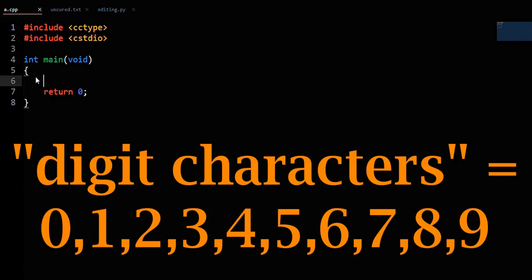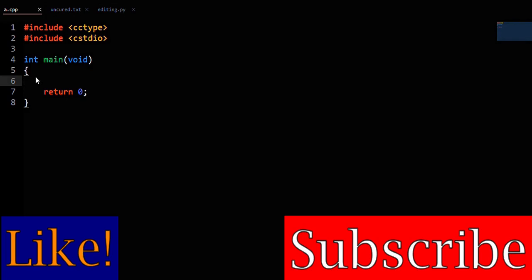It turns out the characters 0 through 9 are the only characters that isDigit considers to be digits. If a character is not in that range, then isDigit will return that the character is not a digit.